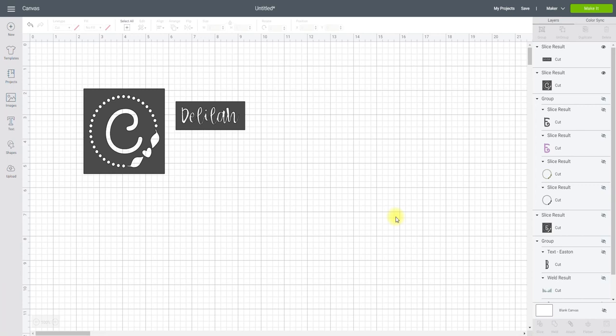There's two ways to do this. First of all we need to be in Design Space and we need to create our stencil. So nice and simple to do, you just grab an image or your text.